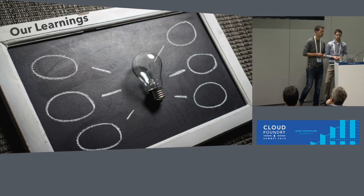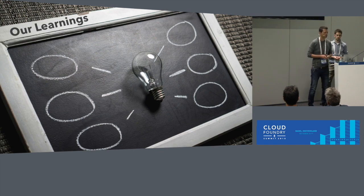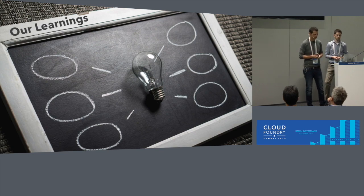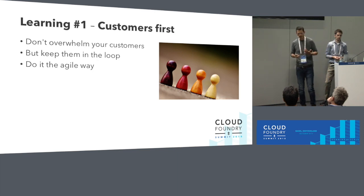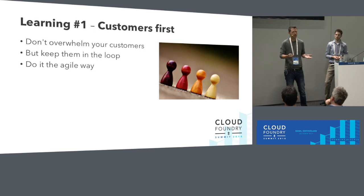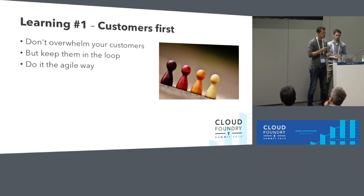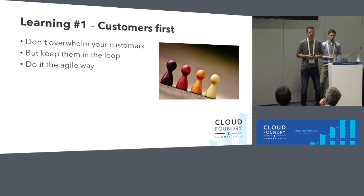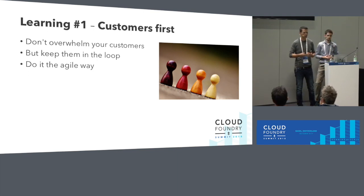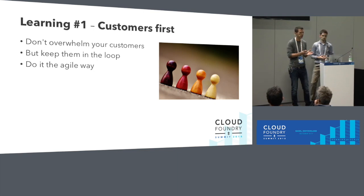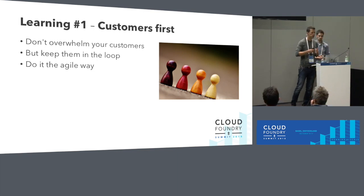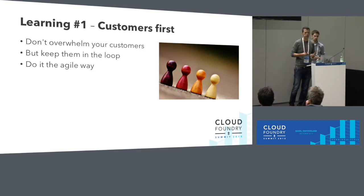We'd like to highlight some points which we think are very important for our migration and may also be important for someone doing similar things. Consumers first — our consumers don't care if the request is handled by a microservice or a monolith. It's our business to make sure there's no impact for them. With the strangler pattern, we were able to do it in very small steps. Of course, we talked to our customers and kept them in the loop. But we want to be in the driver's seat — we want to move the workload, and move it back if necessary.